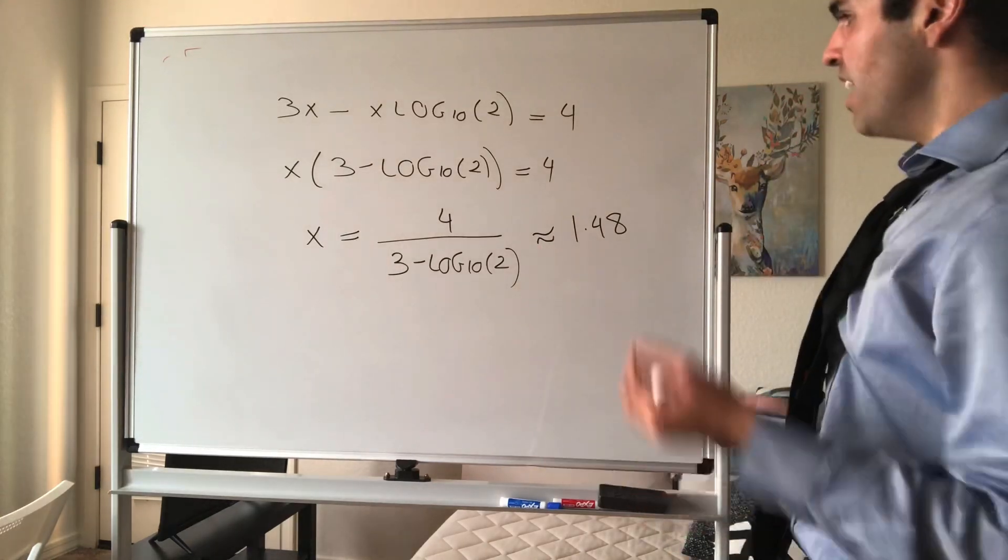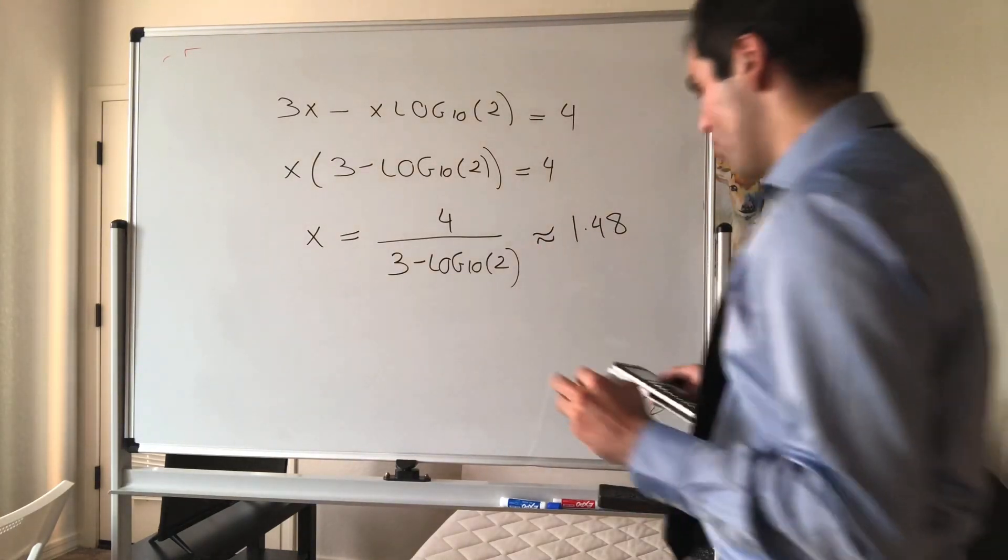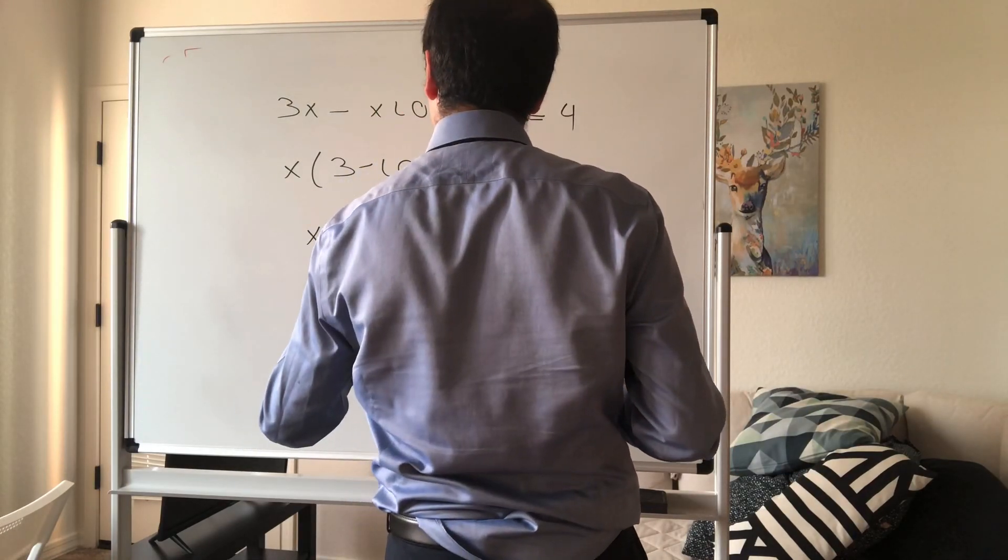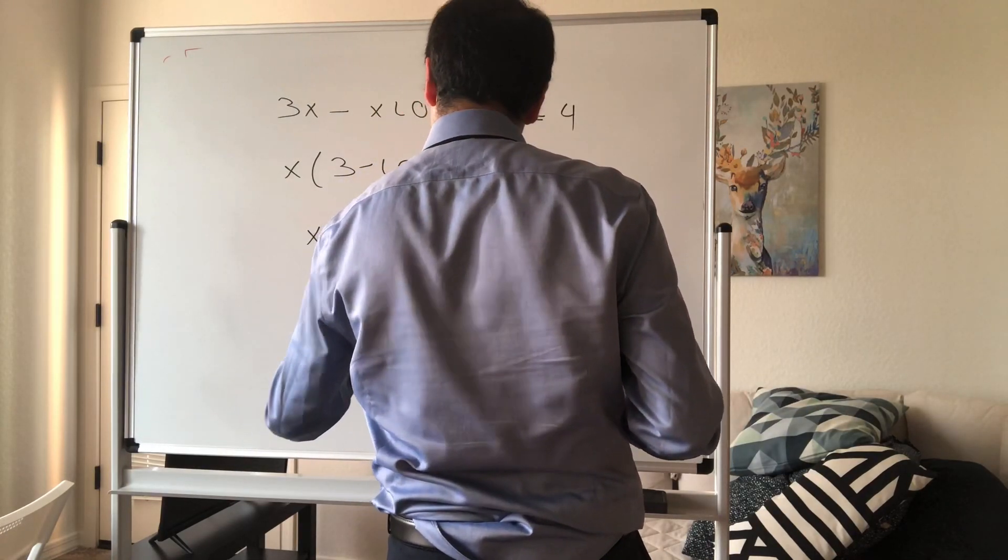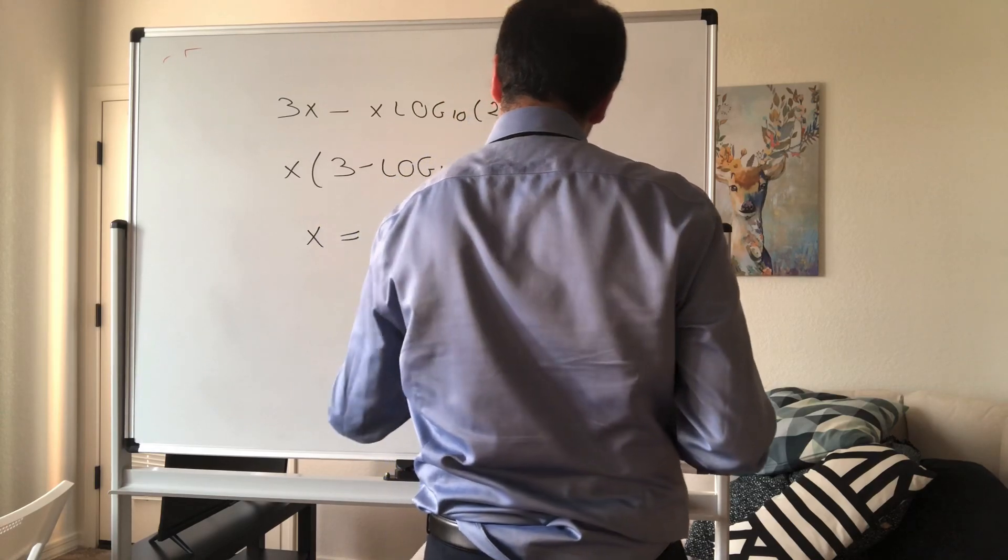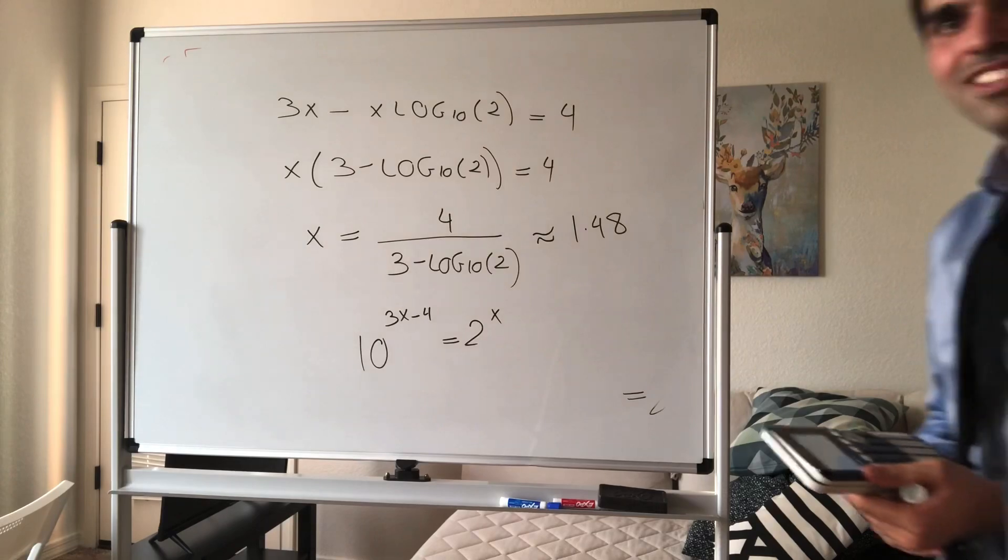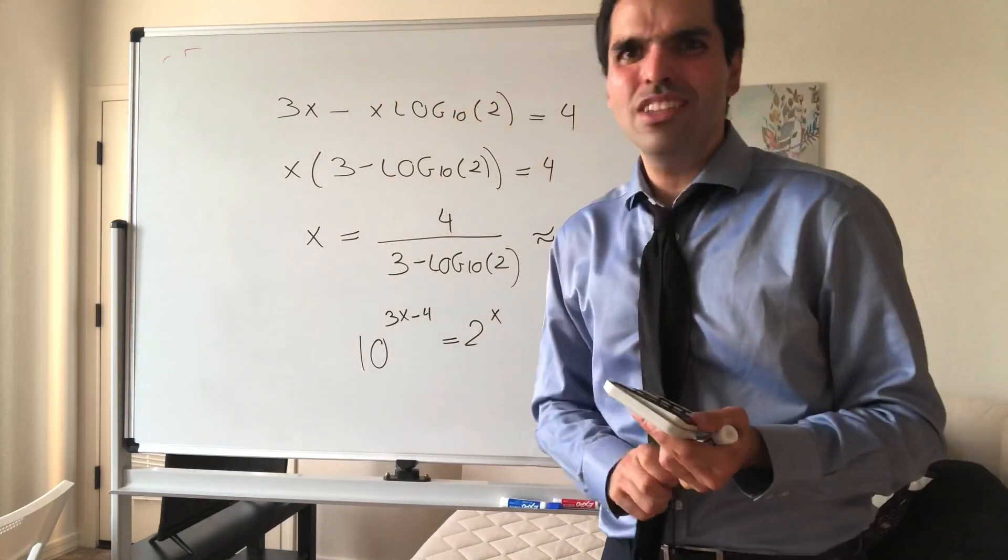And using my awesome calculator, I found it's roughly 1.48. So in other words, for x equals roughly 1.48, we have 10 to the 3x minus 4 equals 2 to the x, roughly like that. So it's very neat. And I believe that's all you need to know about log.